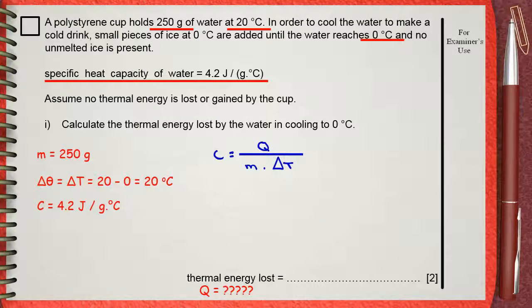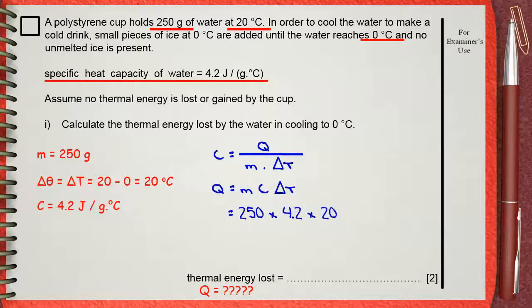This needs some rearrangement. Q equals M times C times delta T. M is 250 grams, C is 4.2, and delta T — the change in temperature — is 20. If you calculate this, we find that the thermal energy lost, Q, equals 21,000 joules.